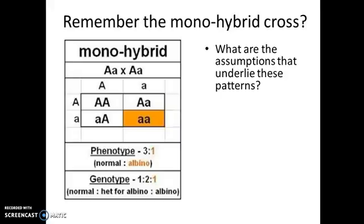The assumptions are that chromosomes segregate during gamete formation — each gamete has one of the two homologues within it, and the genes on those chromosomes segregate along with the chromosomes. Another assumption is the idea of complete dominance. In order to see this 3 to 1 phenotype ratio, big A has to be completely dominant to little a, so that in the heterozygote you see the phenotype associated with the dominant allele, and nothing intermediate or different.